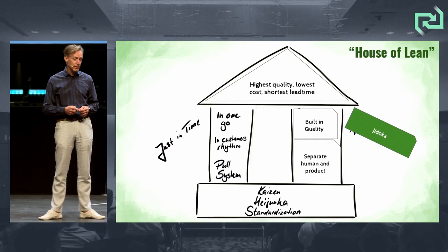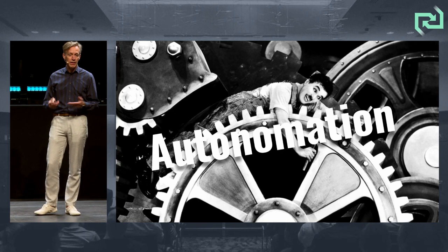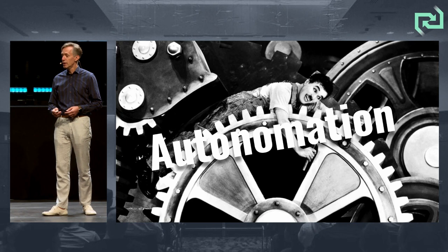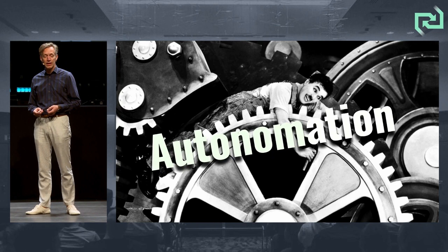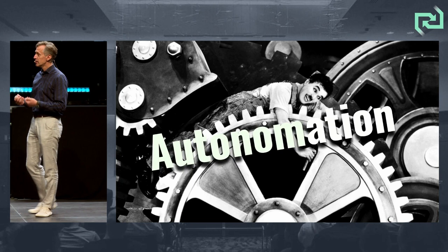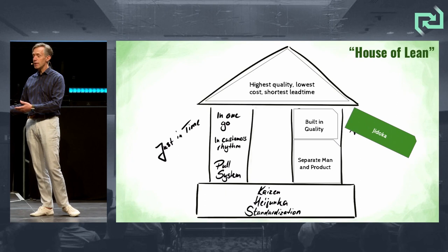If you type jidoka into Google Translate, the right translation is 'autonomation.' What's autonomation? That word exists because of Taiichi Ohno — it's a portmanteau between automation and autonomy. It means: automate to create autonomy, to create agency, to enable people, to give them more efficacy. This whole jidoka means automate — not to control people, but to enable people.